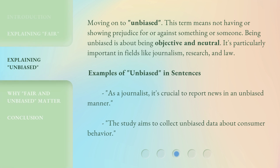Moving on to 'unbiased.' This term means not having or showing prejudice for or against something or someone. Being unbiased is about being objective and neutral. It's particularly important in fields like journalism, research, and law. Examples of 'unbiased' in sentences: 'As a journalist, it's crucial to report news in an unbiased manner.' 'The study aims to collect unbiased data about consumer behavior.'